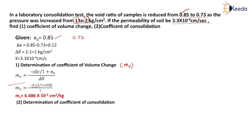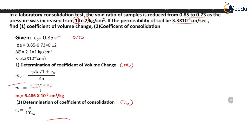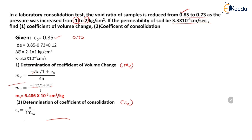Now let us determine the coefficient of consolidation. The coefficient of consolidation is represented as CV, and its formula is CV equals K divided by (gamma times MV). K is the permeability, equal to 3.3 × 10⁻⁴ cm/s. Gamma is 9.81 × 10⁻³, and MV is 6.486 × 10⁻². So the value of CV becomes equal to 0.5186 cm² per second.